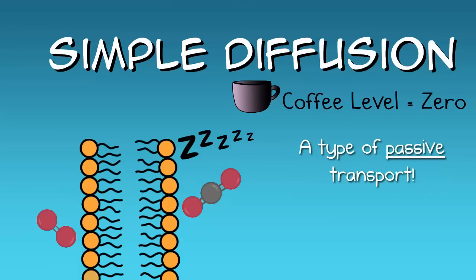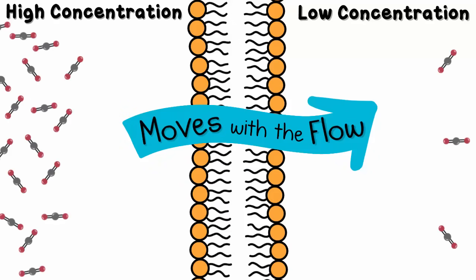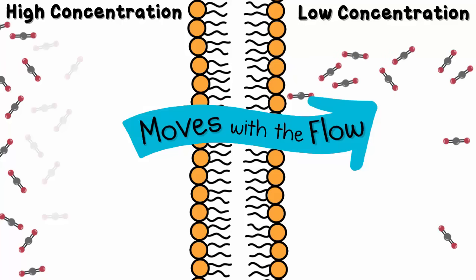Simple diffusion moves with the flow, meaning it moves with the concentration gradient. Molecules move from high concentration to low concentration. So when you hear someone saying that something's going with the concentration gradient, they mean it's going from a high concentration of molecules to a low concentration of molecules.